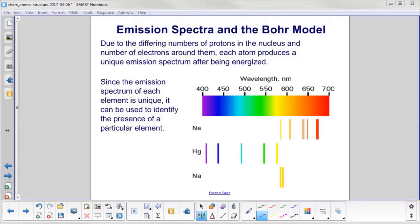Of course, not all elements are as simple as hydrogen. They will have different numbers of protons in the nucleus and different numbers of electrons. So each atom will produce a unique emission spectrum after being energized—sort of a digital fingerprint. Since the emission spectrum of each one is unique, you can use it to identify the presence of a particular element. For example, if you see this, you have neon. If you see this, you have mercury. And if you see this spectrum, that's sodium. And actually, helium was not discovered on Earth first. It was discovered by looking at the emission spectra from the sun.